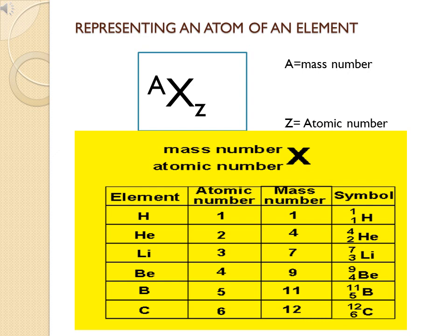From this notation we can find the number of electrons, protons, and neutrons. Taking carbon (C, 12, 6): the top number 12 is the mass number and the bottom number 6 is the atomic number. Since atomic number, proton number, and electron number are always the same, carbon has 6 protons and 6 electrons. For the neutron number, subtract atomic number from mass number: 12 minus 6 equals 6 neutrons.